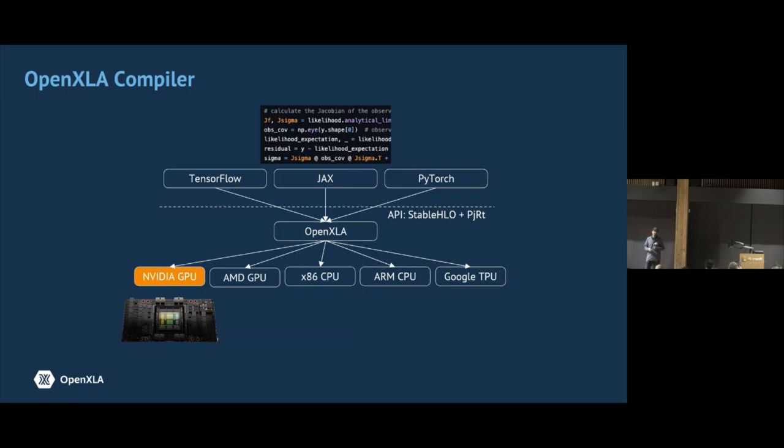It applies a set of optimizations and then it has a set of backends. It can codegen for NVIDIA or AMD GPU, it can codegen into Intel or ARM CPUs, and of course to Google's own TPU hardware.